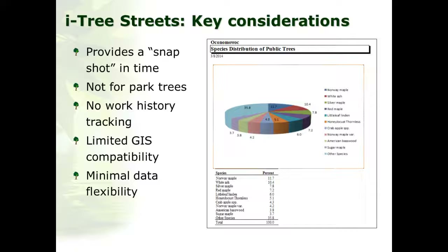Different types of asset management systems have work order and tracking functionality, and people occasionally bring inventory from those systems into iTreeStreets to get ecosystem service information. Although iTreeStreets now allows you to collect GPS information, it does not have streamlined compatibility with GIS or other external systems, so moving data between systems will involve reformatting. Since it is first and foremost an assessment tool, it has minimal flexibility for adding new fields, limiting what data you can collect within the database.